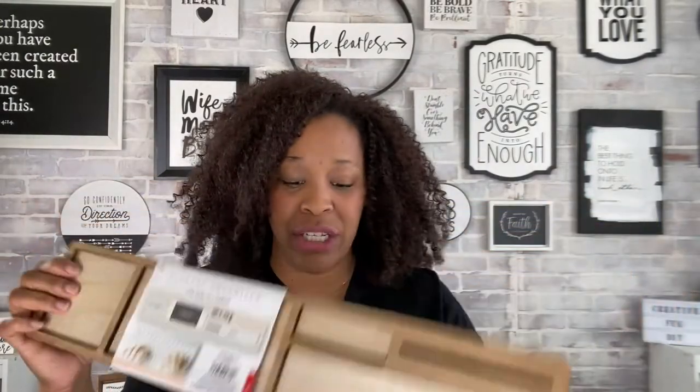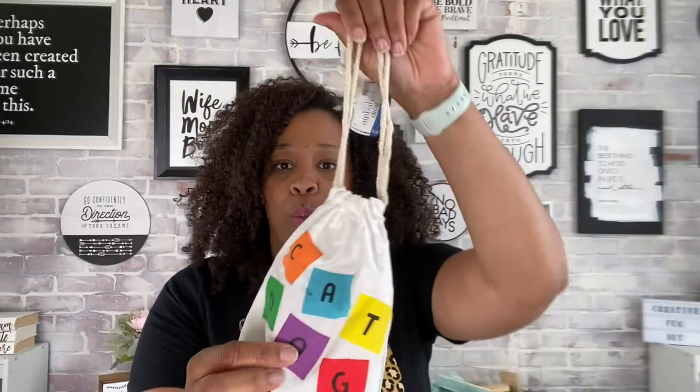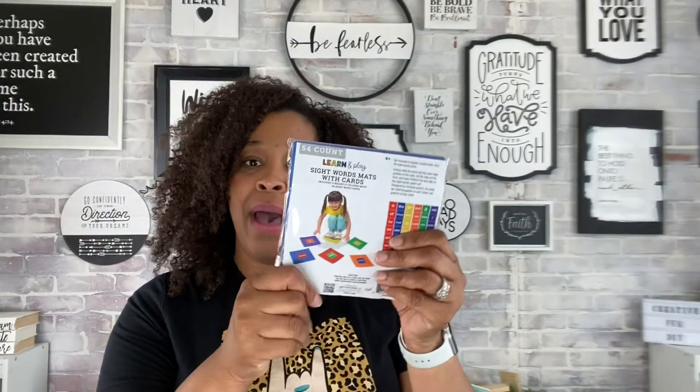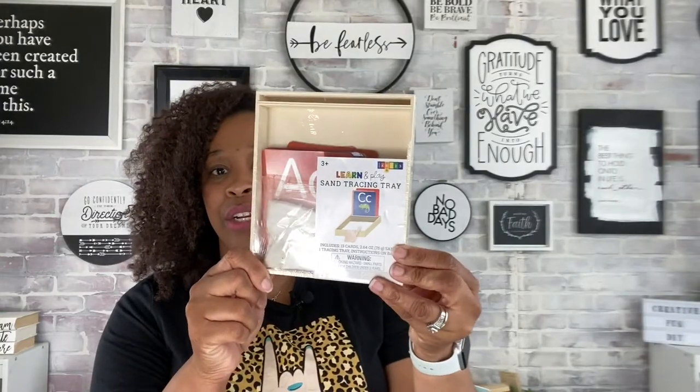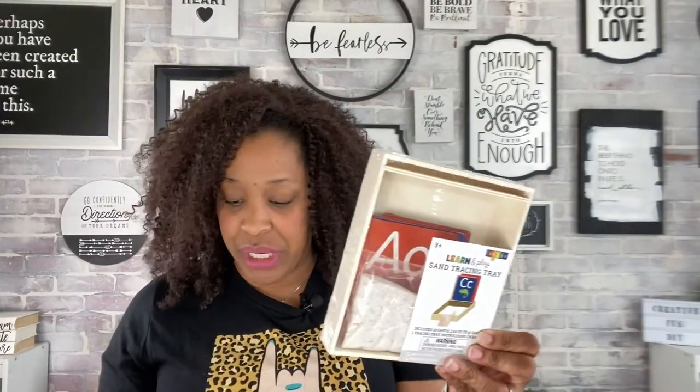So we're using this organizing tray here. We have some wood blocks. This is word strips and icons. Learn and play sight word maps with cards, we're going to use that. These here. And then we are also going to use a learn and play sand trace. So as you can see, that's 5, 8, 11, I can't count, 12.